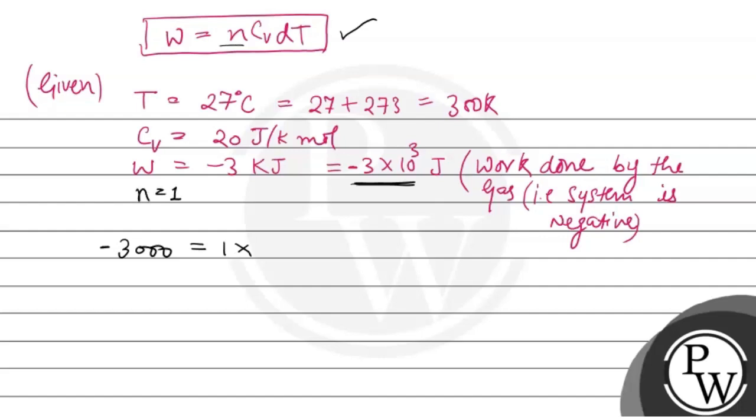1 times Cv is 20, and here it is dT. So dT means it is T2 minus T1. It is minus 3000 equals 20 times T2, which we have to find out, and T1 is 300.